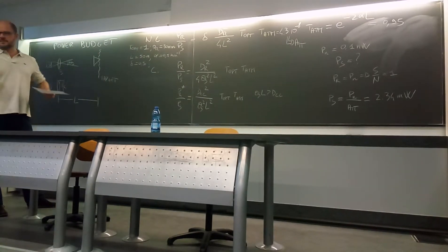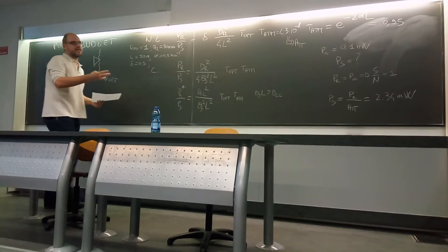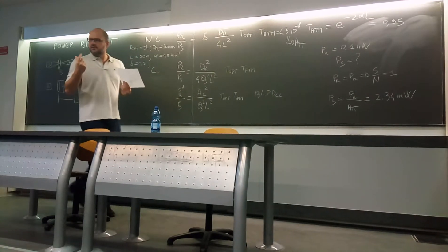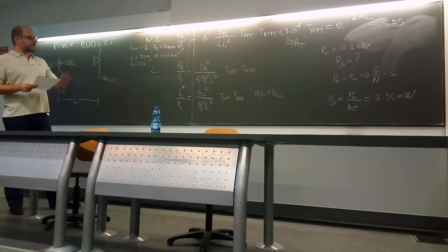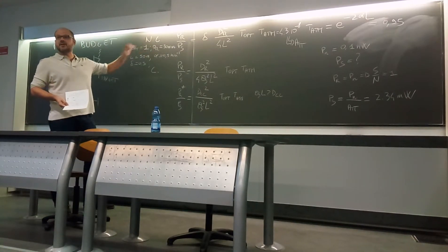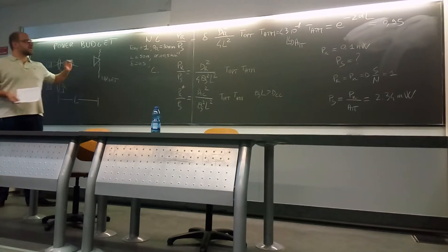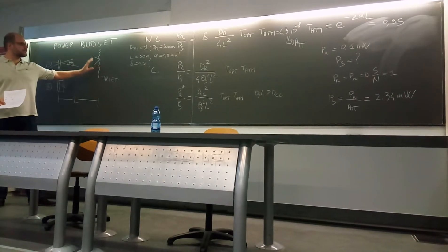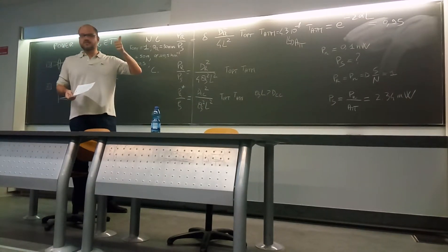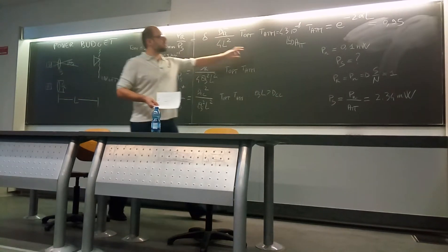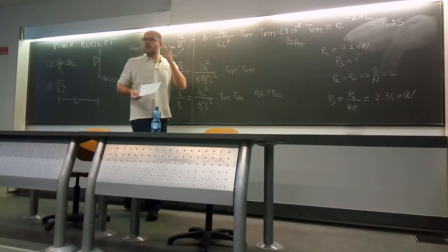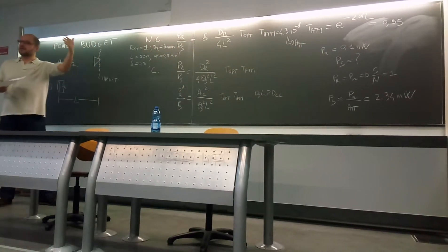This power is not dangerous for the eye. If you look at a red laser with this power, this is not dangerous for the eye. This is what happens under this condition with a non-cooperative target. Now let's change from a diffuse target to a corner cube and evaluate what gain in range we can achieve if the attenuation budget remains constant.